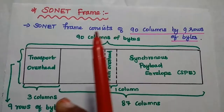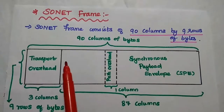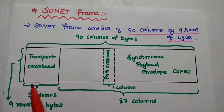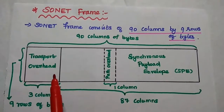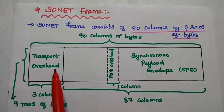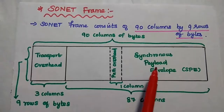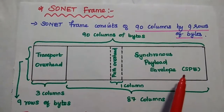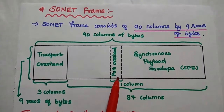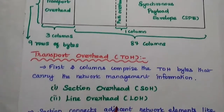The SONET frame structure consists of 90 columns by 9 rows of bytes. The first three columns comprise the transport overhead bytes, which include section overhead and line overhead. The remaining 87 columns together form the Synchronous Payload Envelope (SPE), which carries the user data to be transmitted along with 9-bit path overhead.